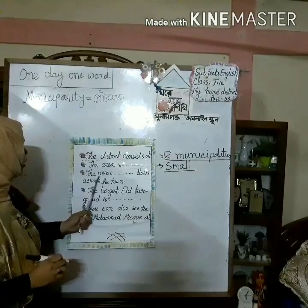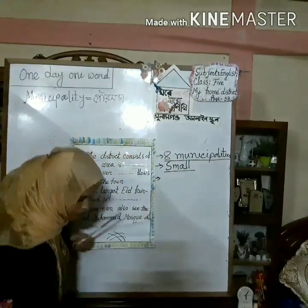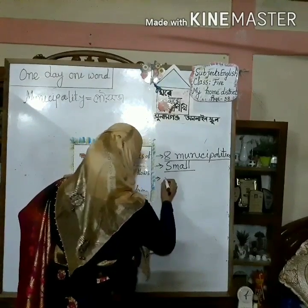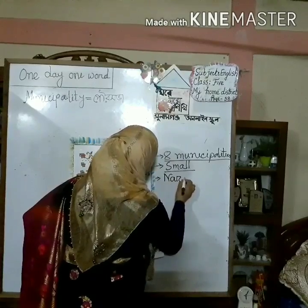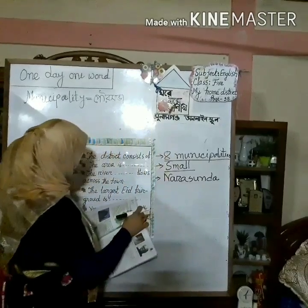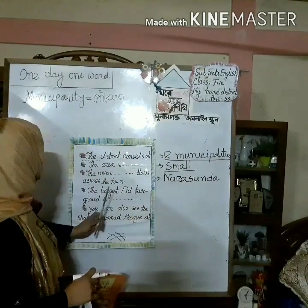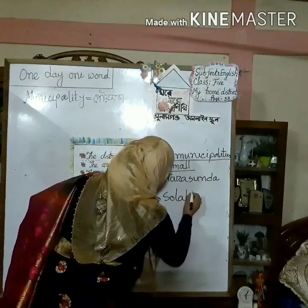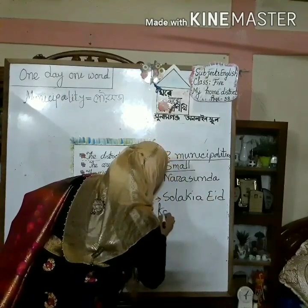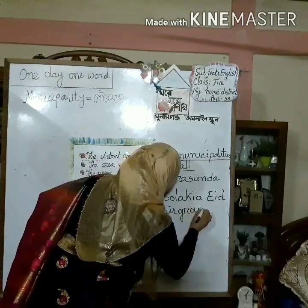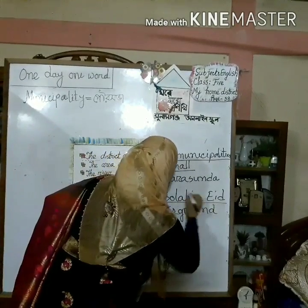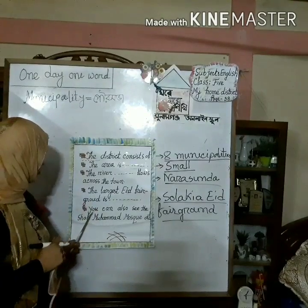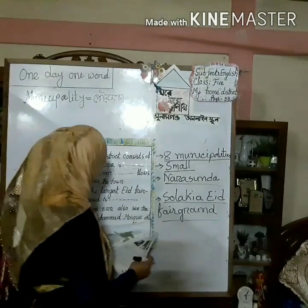Number three: The river Narasunda flows across the town. Number four: The largest Eid fairground is Shulakya. You can also see the Shah Muhammad Mosque at Agarashandur.